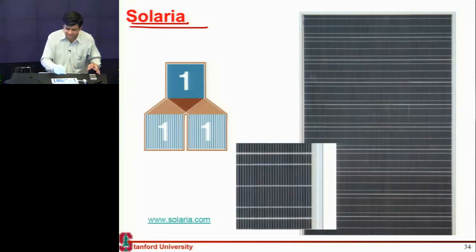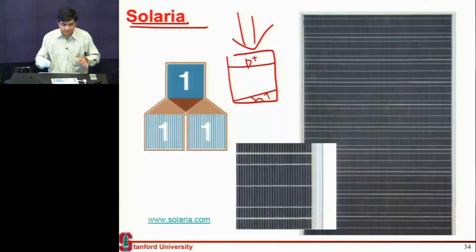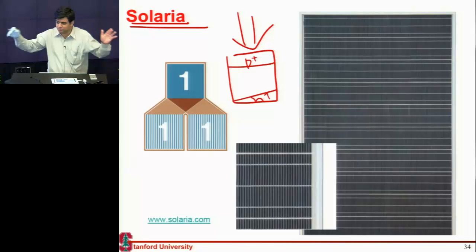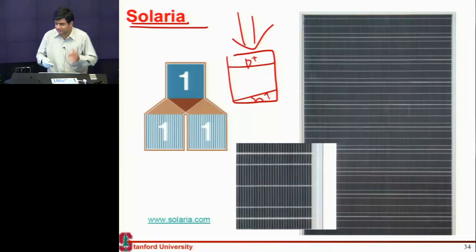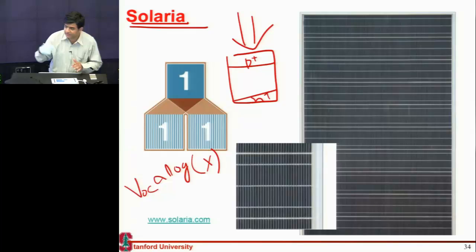But they convert into these centimeter size strips. So these are still made the conventional way, it's still light shining from the top. But you have these small slices. And then you place this DuPont sheet, this plastic sheet on the top, which gives you a concentration of 2x. And since your VOC goes as a log of your concentration, you get increase in your VOC and you get increase in your efficiency.